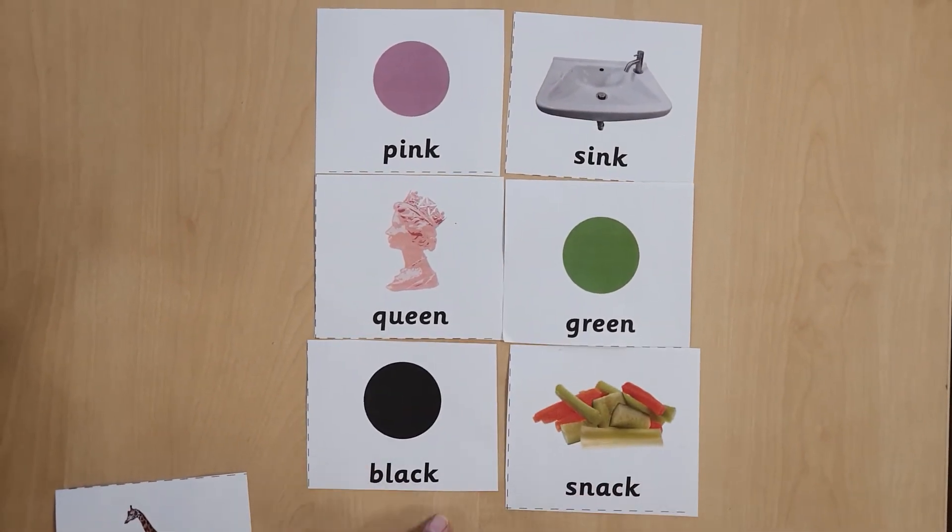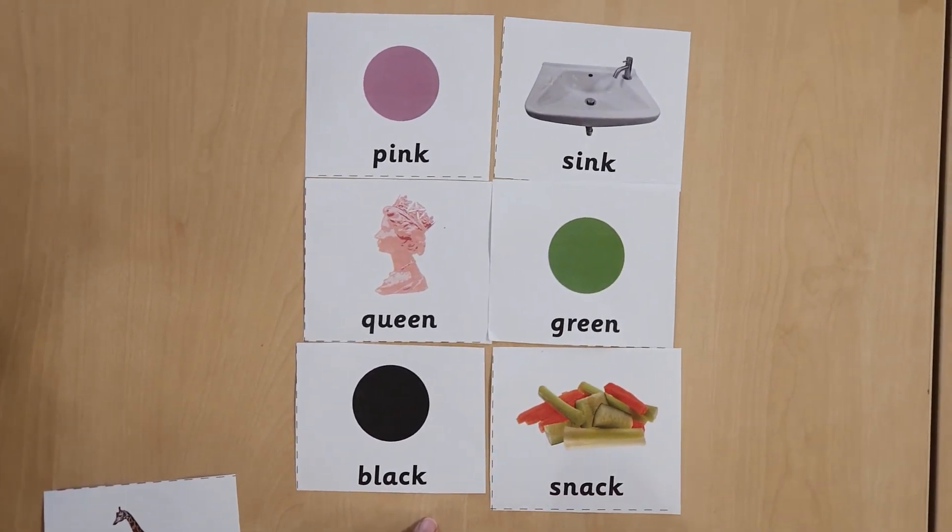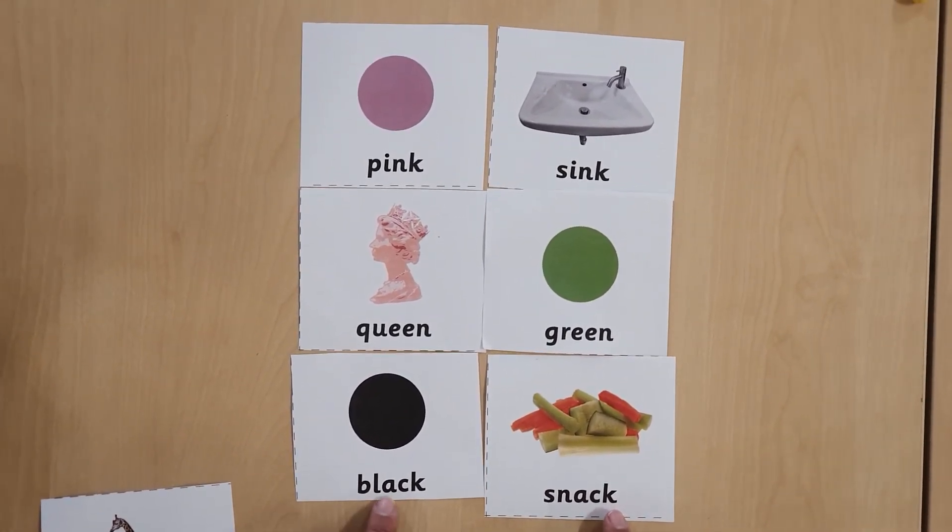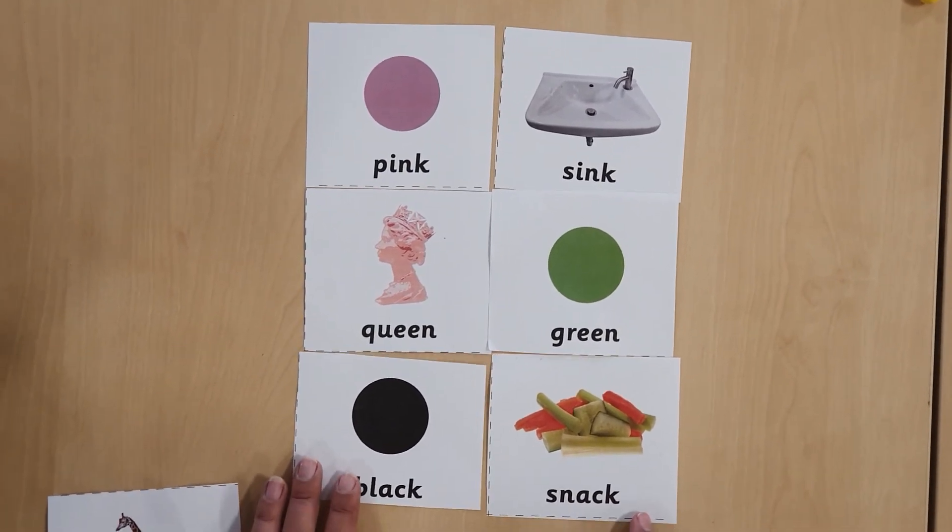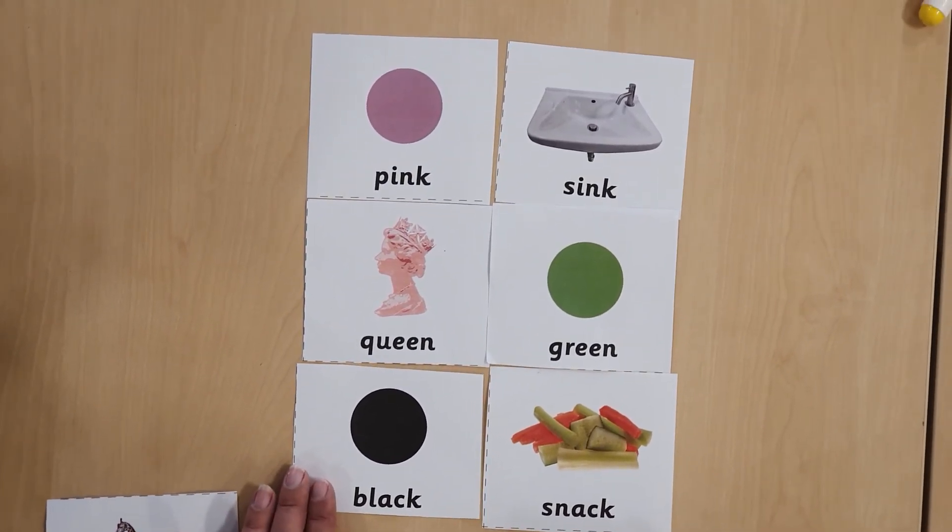Oh, we've got one more left. What is that? We've got snack. Snack and black. Does it rhyme? Yes. Can you spot the sound that is the same? Well done.